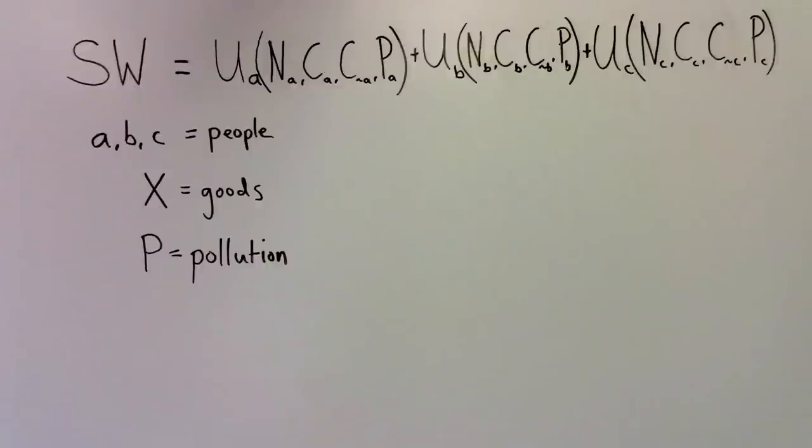We can analyze the effect of competitive consumption using a modified utility function such as this, in which each individual's utility is a function of N, the non-competitive goods they consume, C, the competitive goods they consume, C tilde, the competitive goods that others consume, and P, the pollution they endure. Again we assume that more is better and pollution is bad, but we also assume that when anyone consumes more of the competitive good, it reduces others' status.